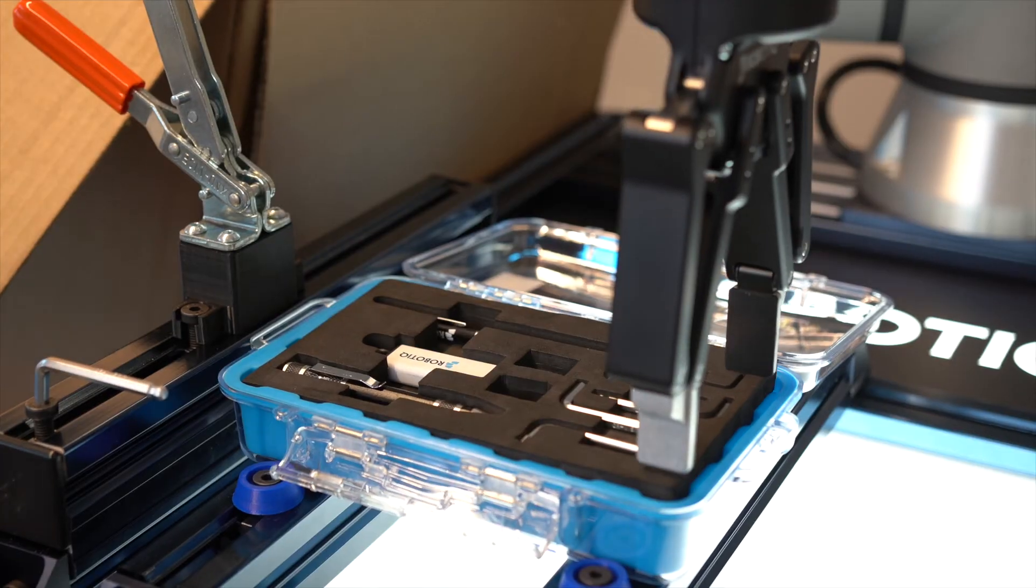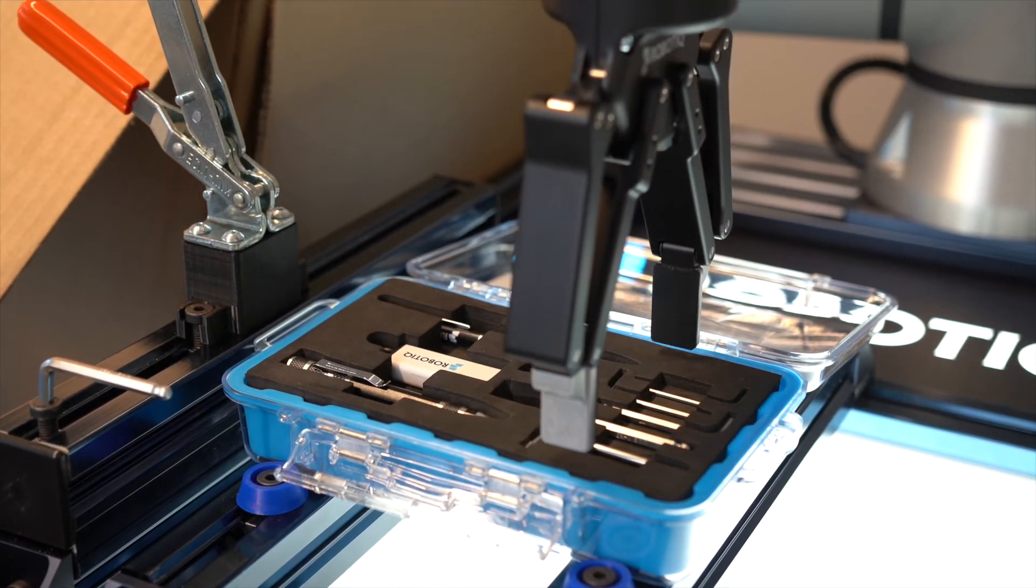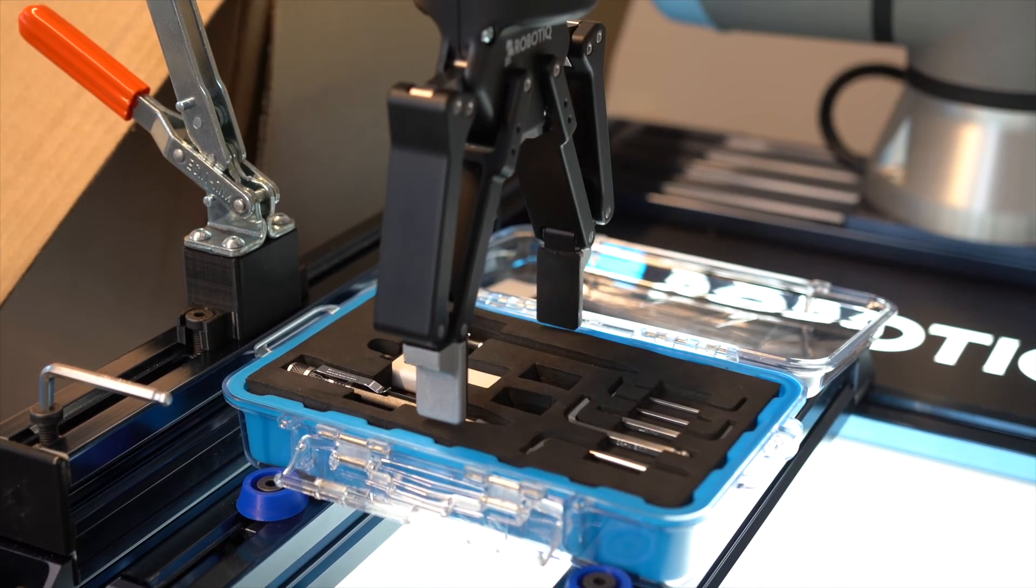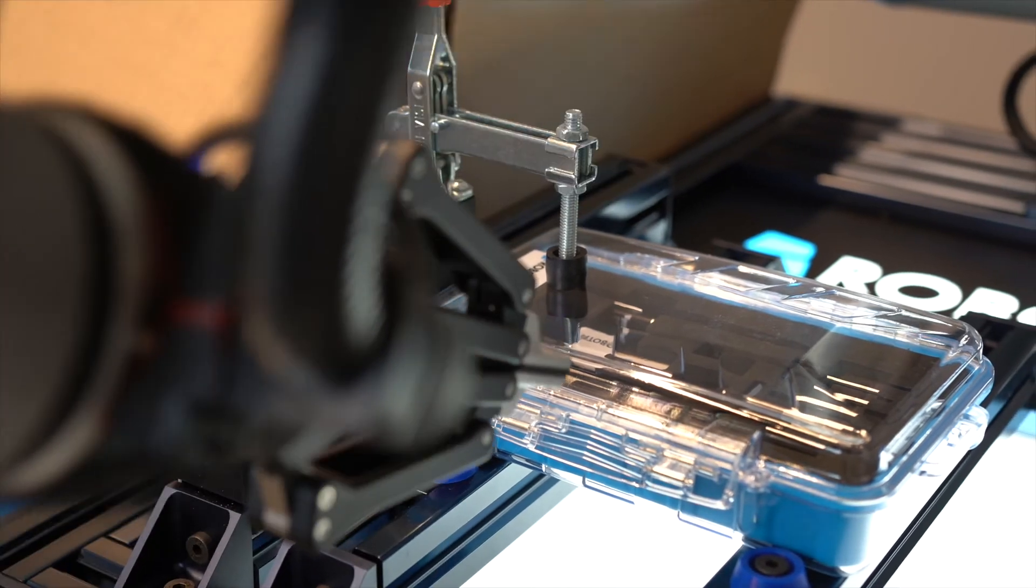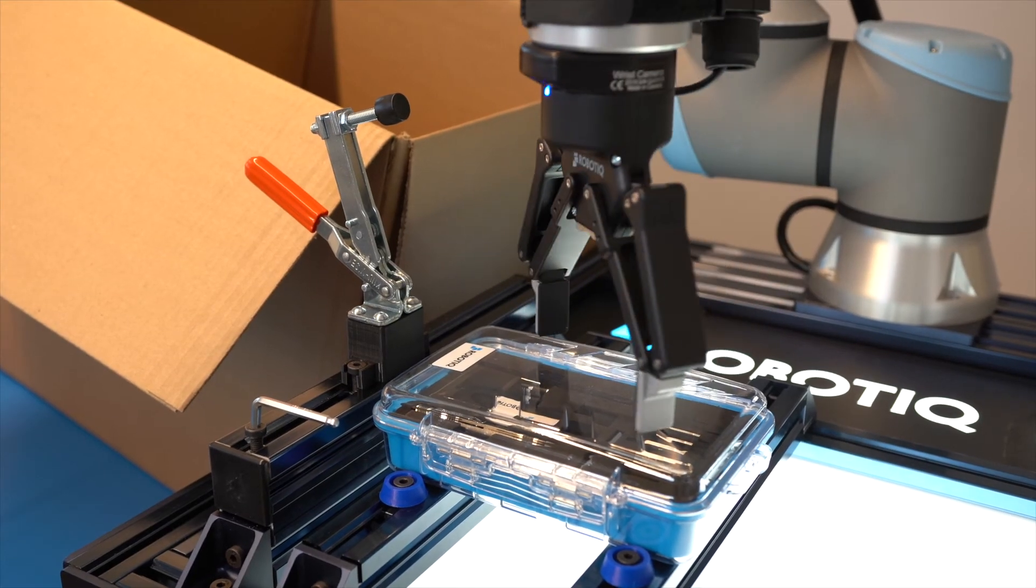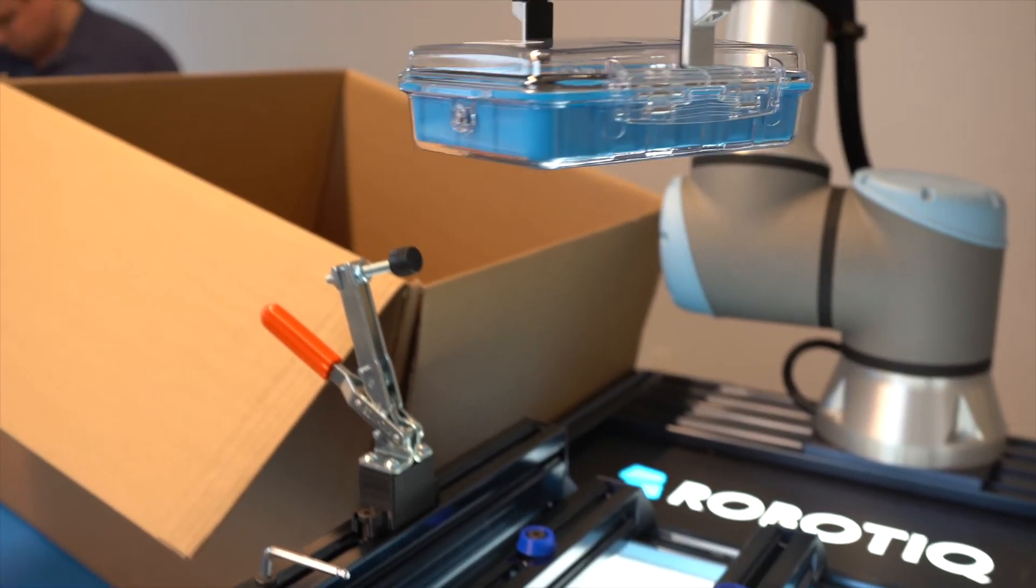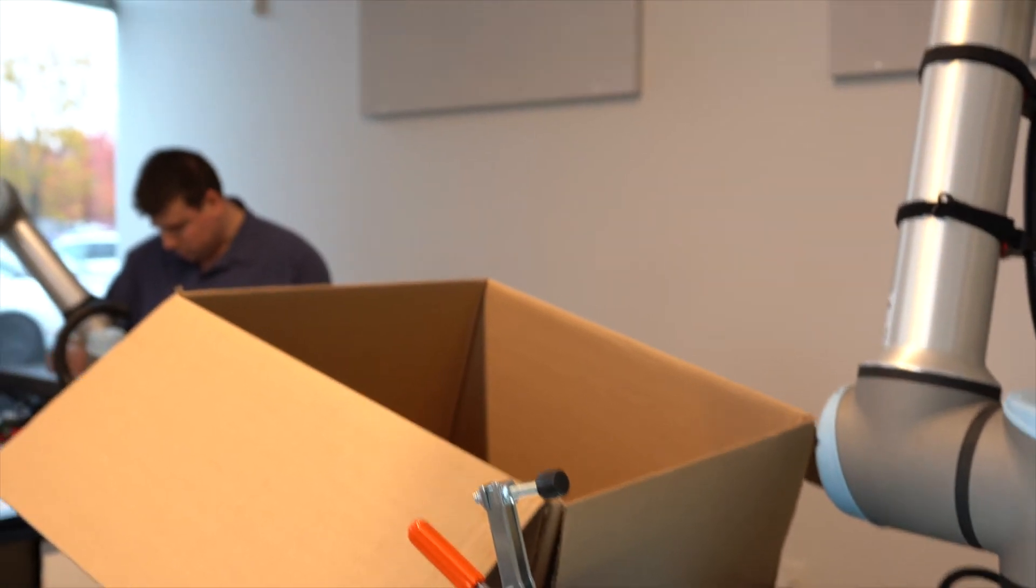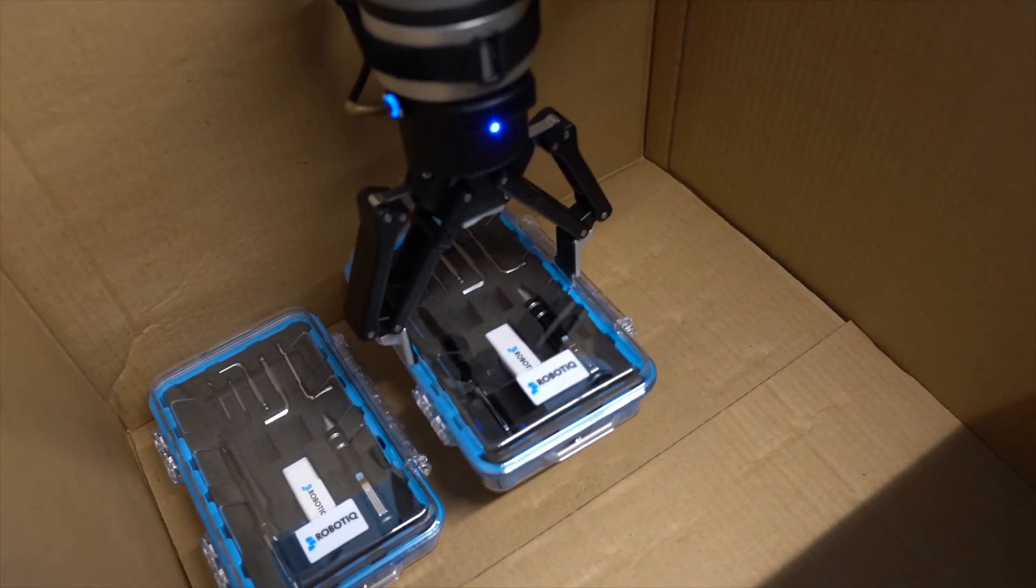The hardest part was really to open the case which has a latch on it. Usually these latches are made to be opened by hand, so the hardest thing was to use a gripper to open that latch. The second hardest part was to insert the foam that is pretty tight inside the case. We're using the Force Co-Pilot features to insert the foam and open the latch on the case.